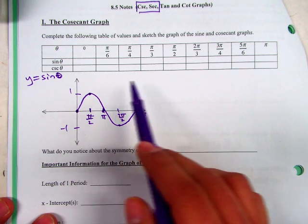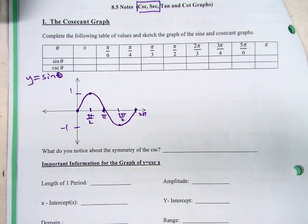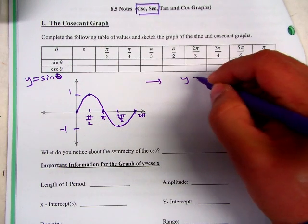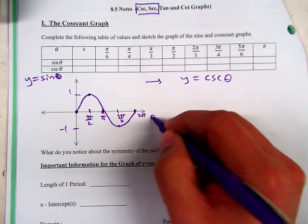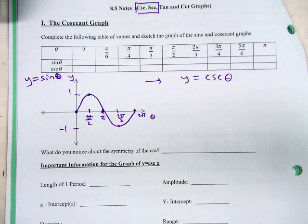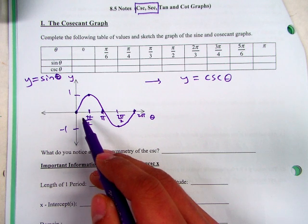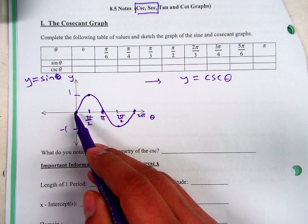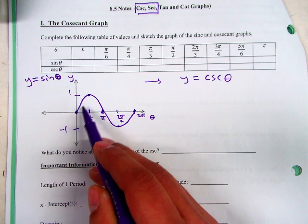At three pi over two, it's negative one. And then at two pi, we've completed one period, and that's back at zero. So this is regular sine. Now, instead of doing a table and doing all this and that, we're going to use this graph to create the cosecant graph. So we're going to use this graph to get the cosecant graph. How is cosecant related to sine? Not inverse, but reciprocal, right?